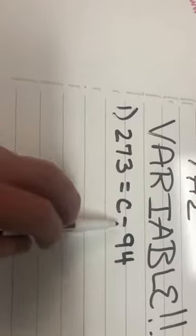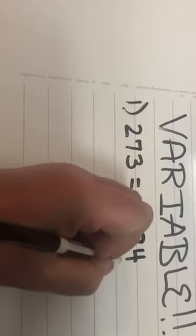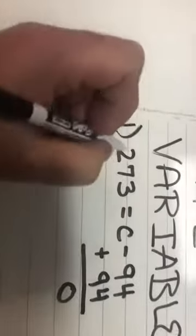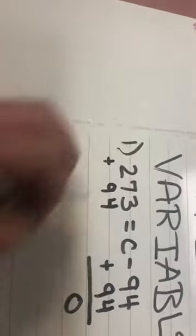Now since I want to isolate the variable, I need to get c by itself. Now this is a negative 94, so what I'm going to do is add 94 to both sides. That's going to give me zero. I'm going to come over here. I'm going to do 273 plus 94, and I'm just going to do a basic addition problem.